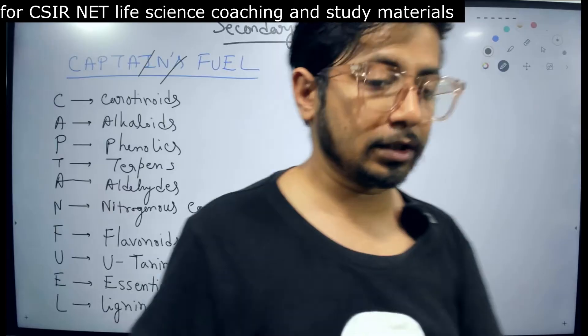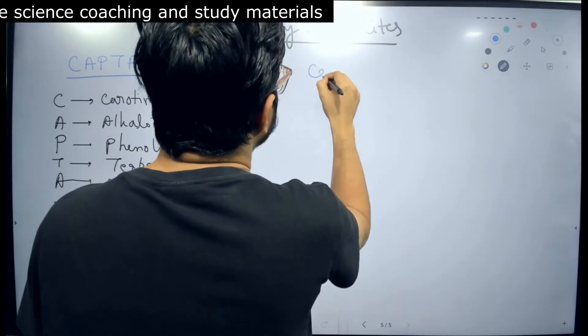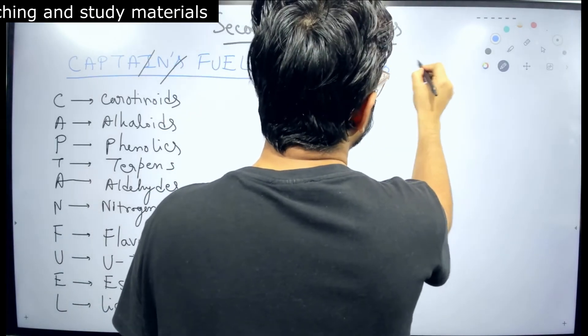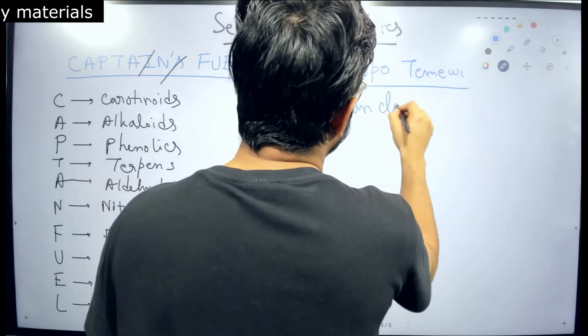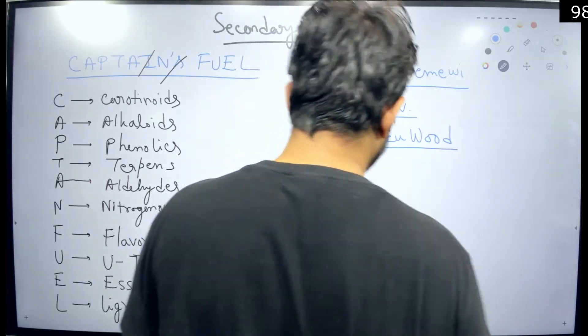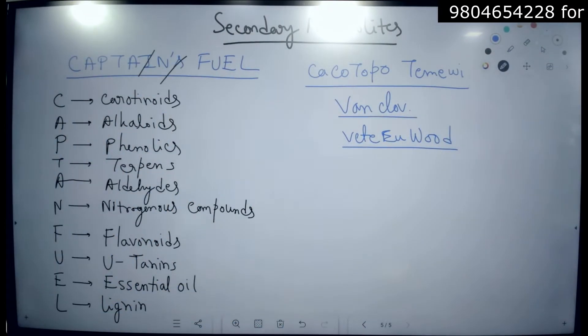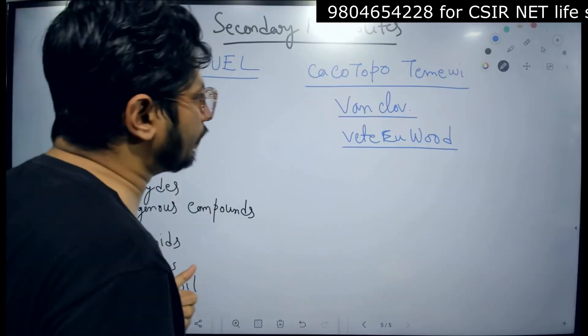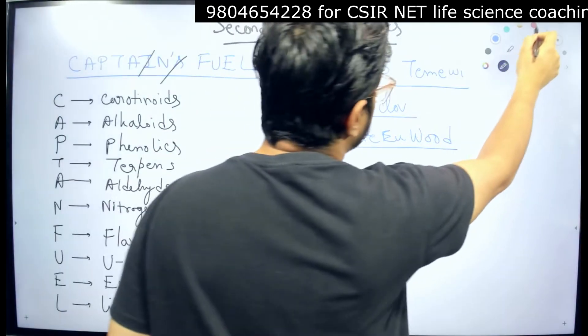Because once you understand the examples, you can also correlate the function of the secondary metabolites. And for that I'll use a different mnemonic here - three sets: CACO TOPO, then T-ME-V, VAN CLOVE, and the third set, VETY WOOD. This is something that you may not get to your brain quite easily, but these are the three segments where all the functions of these different secondary metabolites in plants can be well established.